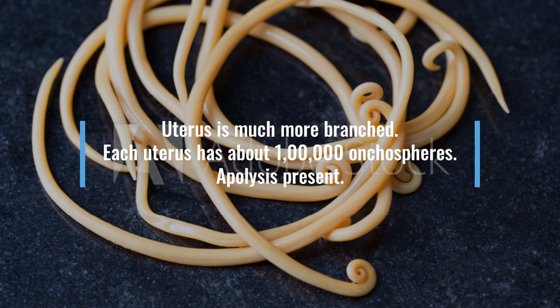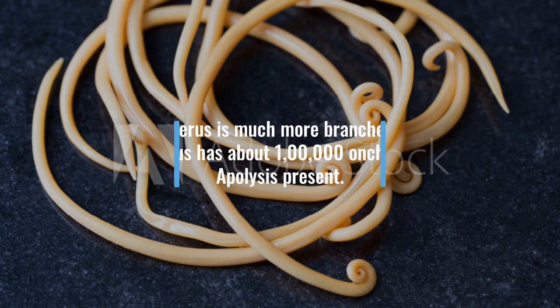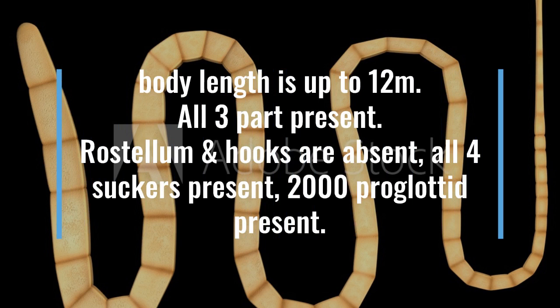This tapeworm — Taenia saginata (beef tapeworm) — is the most common tapeworm affecting man. Its length is up to 12 meters, while the pork tapeworm was 1 to 5 meters, meaning this one is very long. It has the same 3 parts: scolex, neck, and strobila. However, rostellum and hooks are absent; 4 suckers are present; and 2000 proglottids are present.